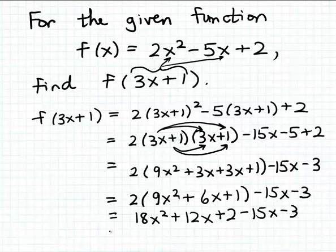And now finally to finish this simplification of this algebraic expression, we want to add like terms together. We do have a couple of like terms. 12x minus 15x is going to be minus 3x. And then plus 2 minus 3, of course, is minus 1. So there's our final result. F of 3x plus 1 is 18x squared minus 3x minus 1.